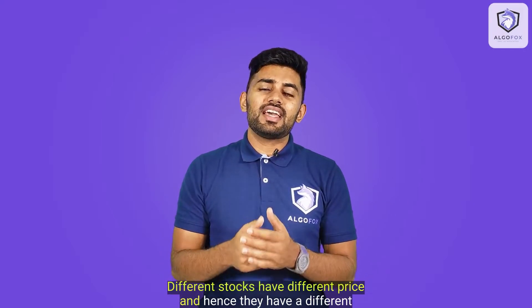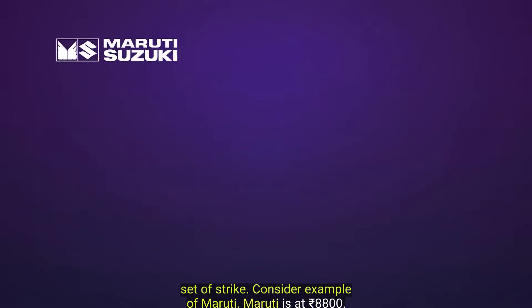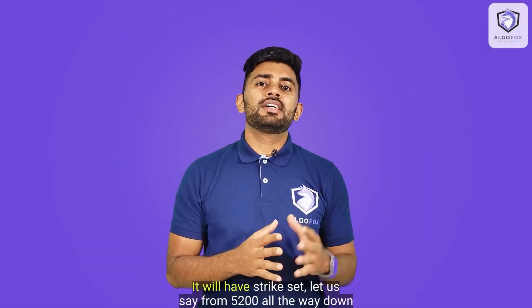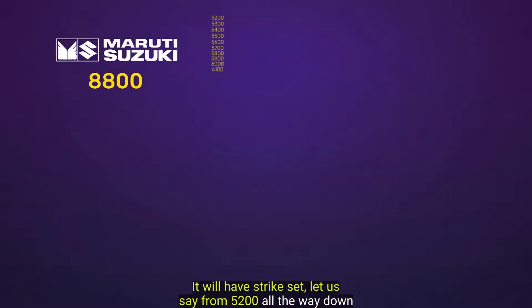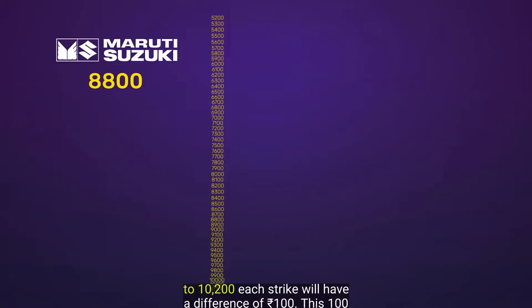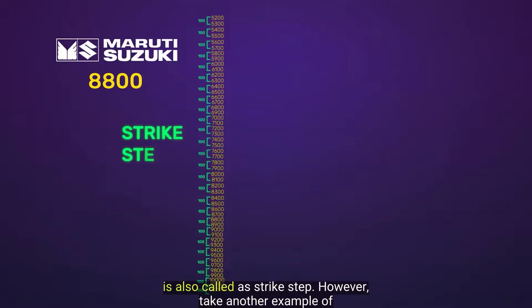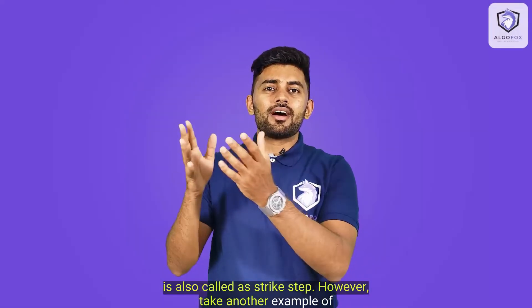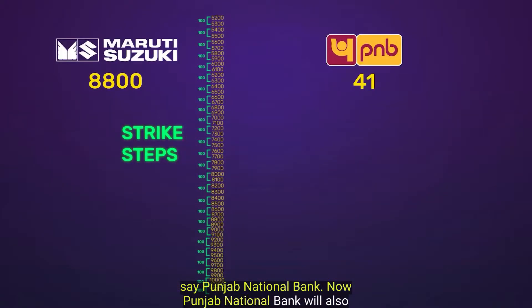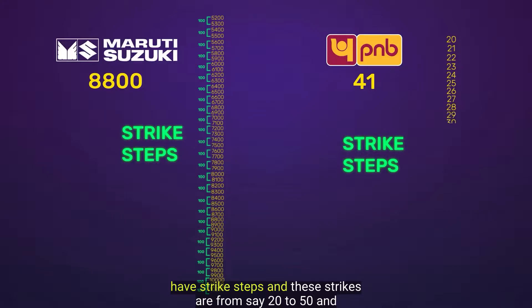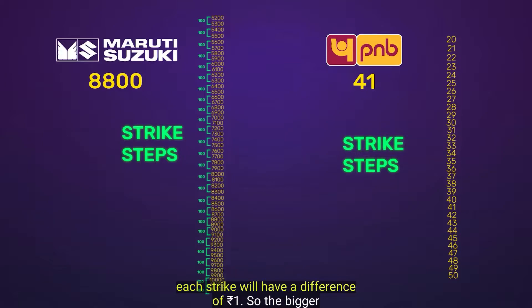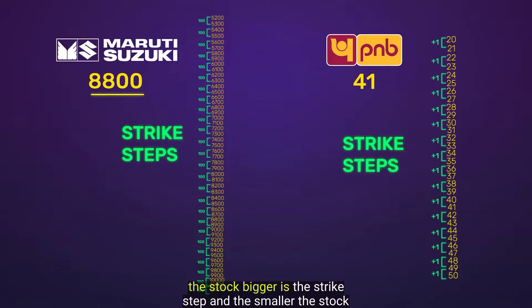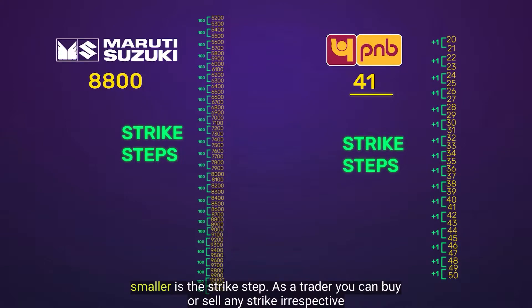Different stocks have different prices and hence they have a different set of strikes. Consider the example of Maruti, which is at 8,800 rupees. It will have a strike set from say 5,200 all the way to 10,200, and each strike will have a difference of 100 rupees. This 100 is also called the strike step. Take another example of Punjab National Bank — its strikes run from say 20 to 50, with each strike having a difference of 1 rupee. So the bigger the stock, the bigger the strike step, and the smaller the stock, the smaller the strike step.